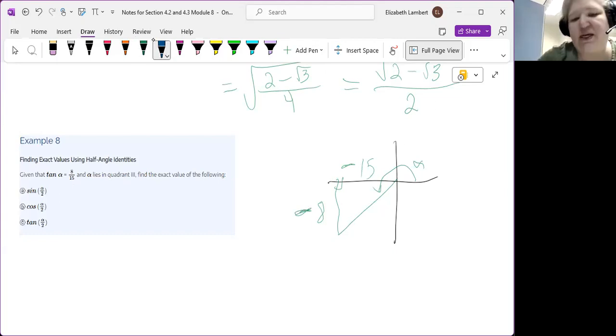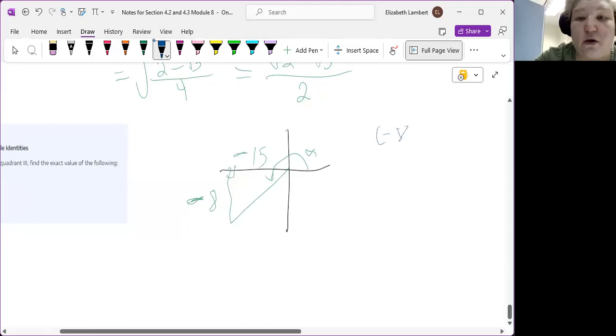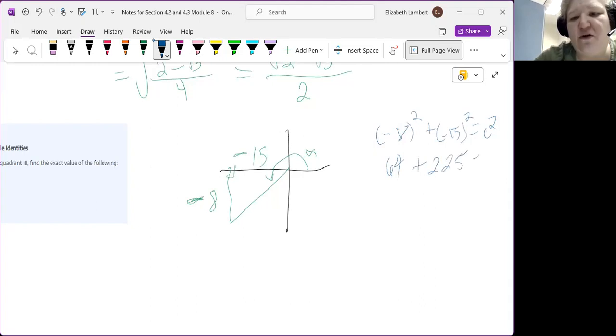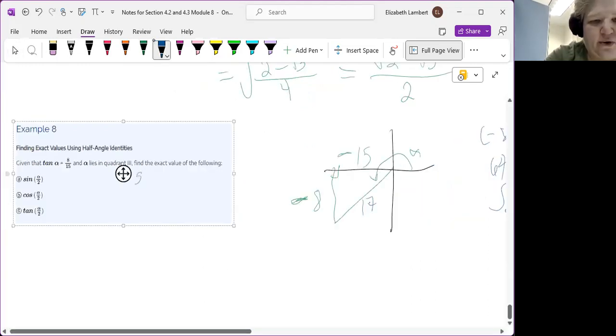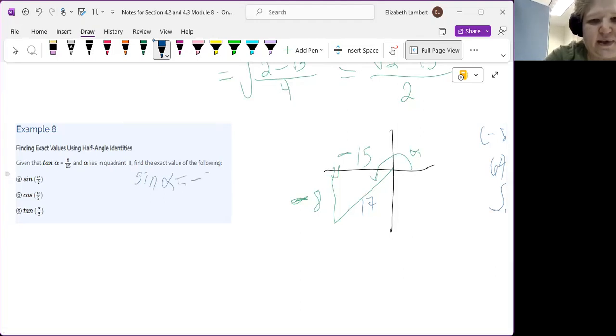Now if we're going to answer these things we need to know the third side. So let's just sneak over here real quick. Negative 8 squared plus negative 15 squared equals c squared. So 64 plus 225 is 289. And so our c is 17, another Pythagorean triple. So this is just to make the sine cosine not super ugly. So let's just go ahead and add that in our notes here. The sine of α is negative 8 17ths. And the cosine of α is negative 15 17ths.